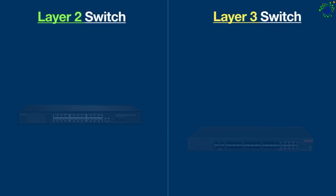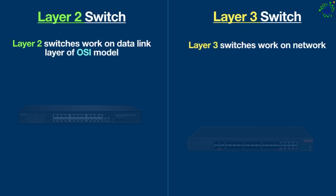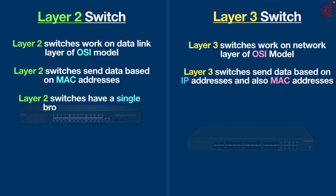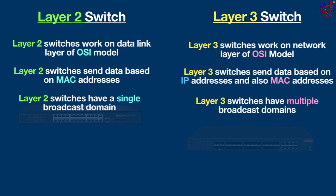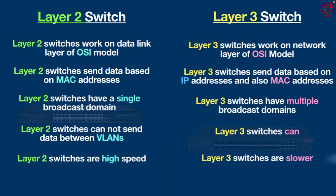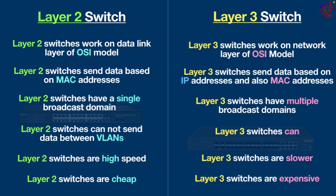Here are the major differences between layer 2 and layer 3 switches. Layer 2 switches work on the data link layer while layer 3 switches work on the network layer. Layer 2 switches send data based on MAC addresses while layer 3 switches use both IP addresses and MAC addresses. Layer 2 switches have a single broadcast domain while layer 3 switches support multiple broadcast domains. Layer 2 switches cannot send data between VLANs but layer 3 switches can. Layer 2 switches are higher speed but less expensive, while layer 3 switches are slower but more expensive. Layer 2 switches require simpler configuration while layer 3 switches require complex configuration.